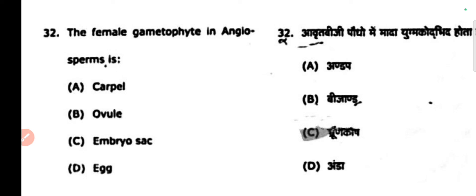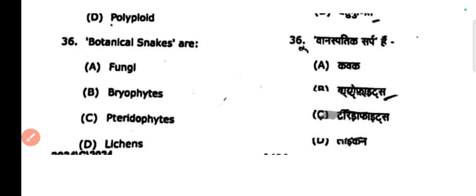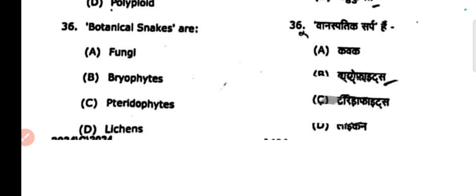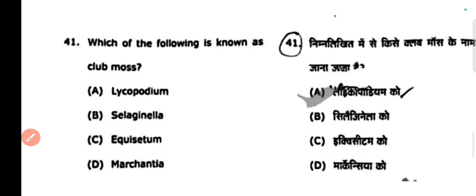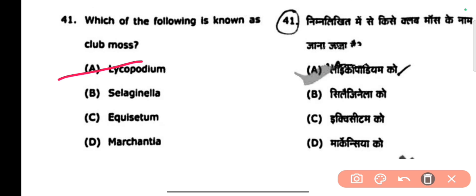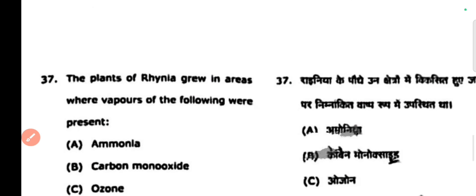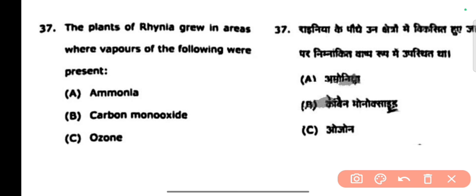Next question: the female gametophyte in Gnetum is the embryo sac — that is the correct answer. Next question: botanical snakes are pteridophytes. Next question: which snow-laced club moss? Next question: the plant Rhynia grows in areas where carbon monoxide vapors are present.